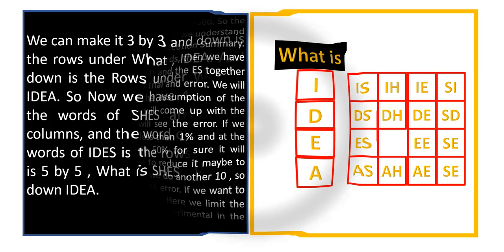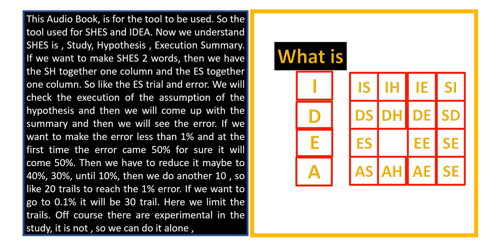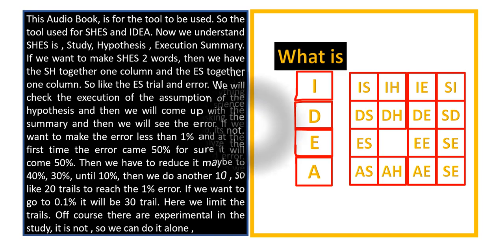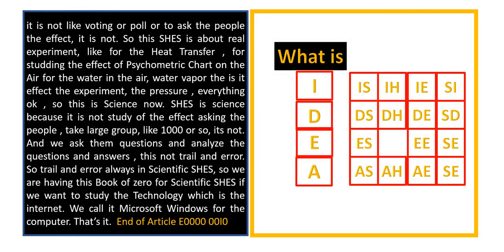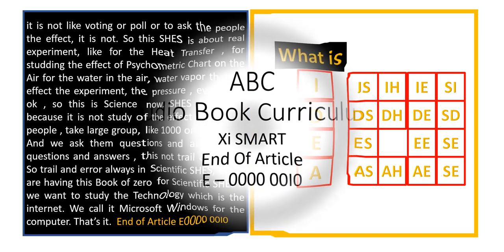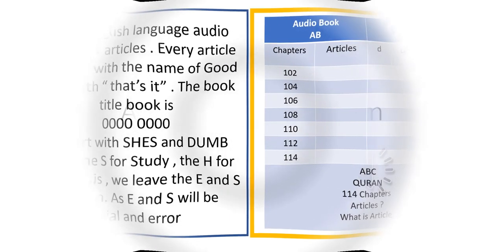So this table relates to Quran, the chapters. Quran chapters total 114. So in this table from 102 to 114 in the left column, left column under the AB.